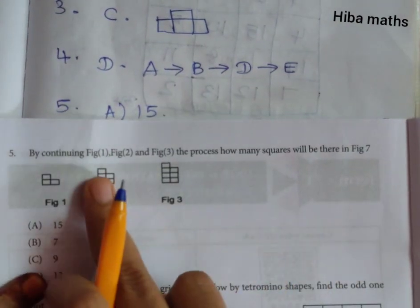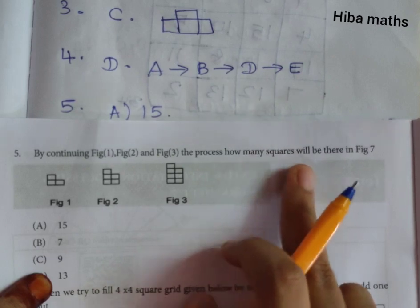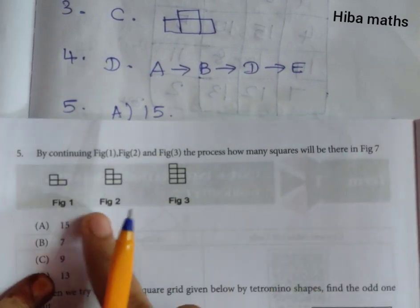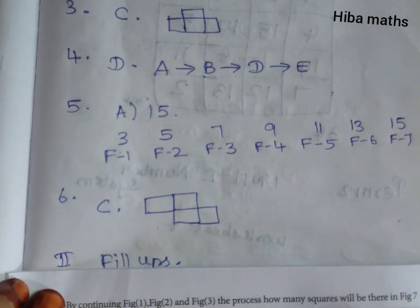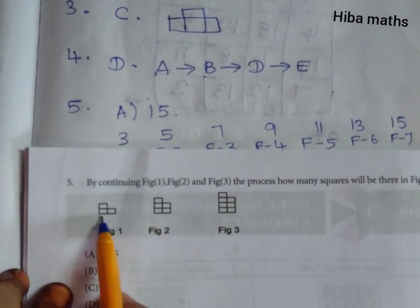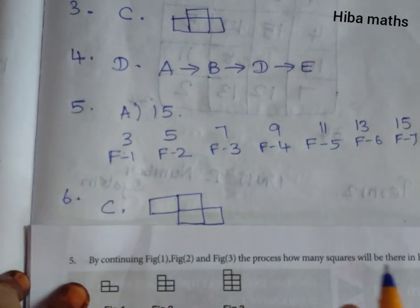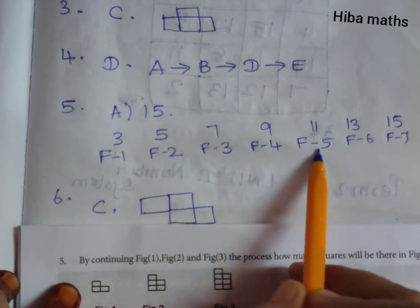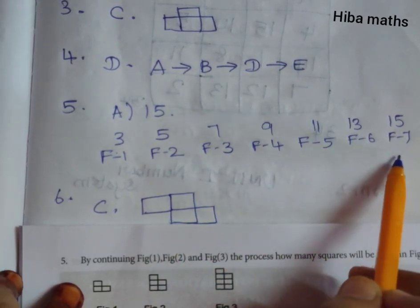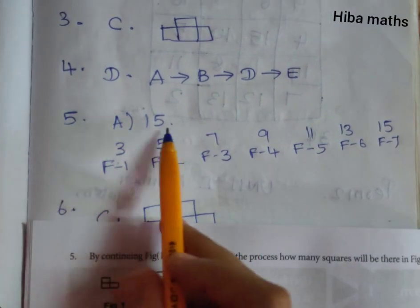By continuing figure 1, figure 2, figure 3, the process, how many squares will be there in figure 7? So 3, 5, 7, 9, 11, 13 and 15. So figure 7 level is 15. So our option is A, 15.